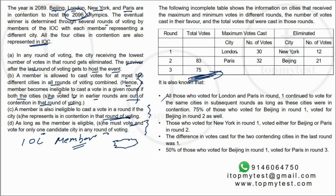Now we need to figure out who is voting for which city, and in which round. Let's redraw the table, summarize the information, and see what we can get out of this set.